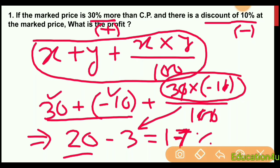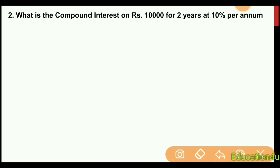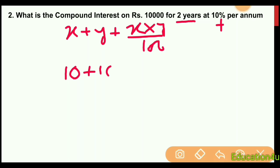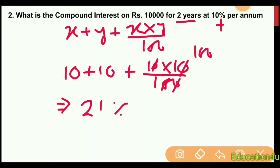Next question: What is the compound interest on rupees 10,000 for two years at 10 percent per annum? For two years, we use the same formula: X plus Y plus X into Y divided by 100.